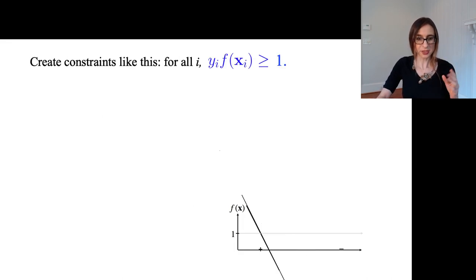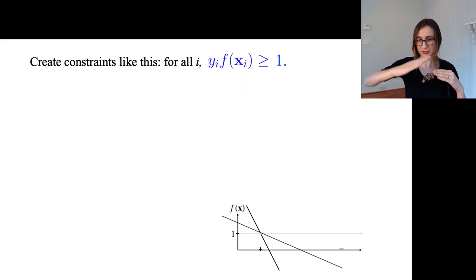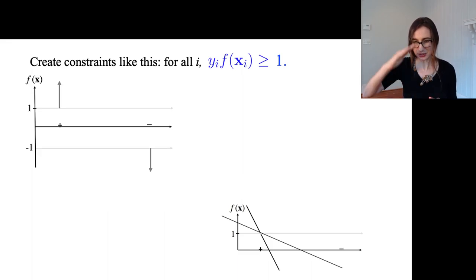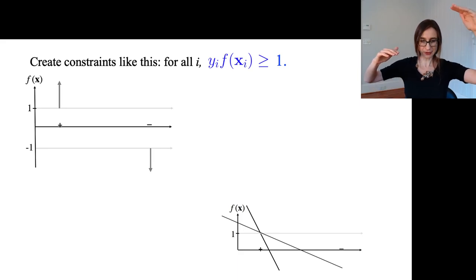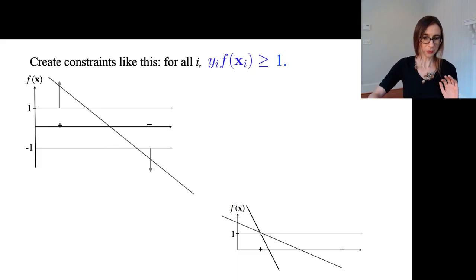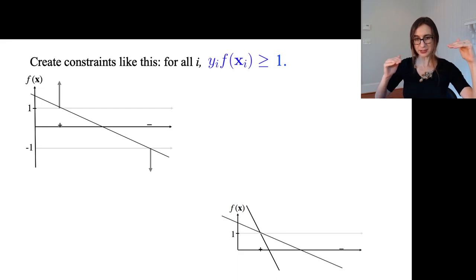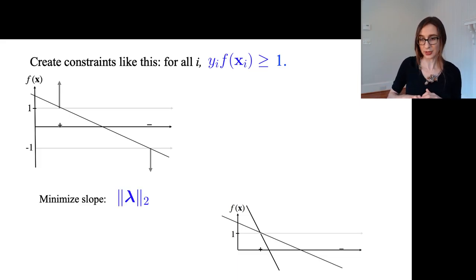We create constraints that look like this: for all i, Y times F is at least one. We create constraints that say for the positives, F of x has to be above one; for the negatives, F of x has to be below minus one. You can move around the slope however you like, as long as when you minimize the slope, you obey these constraints that the functional margins are at least one. Then you are minimizing the slope, or the norm.